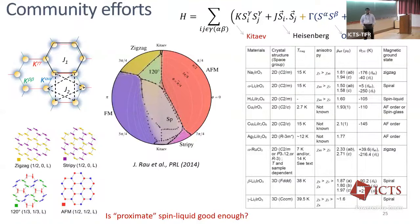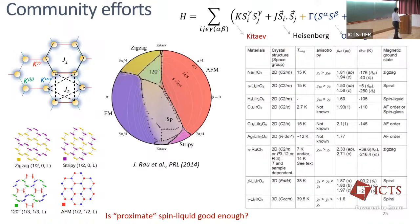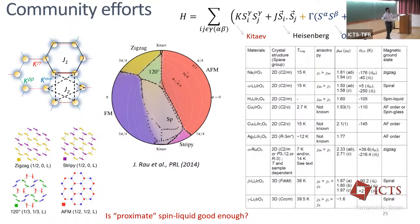So that raises the question: is a proximate spin liquid really good enough? The reason these materials order is because you have all these symmetry-allowed terms in the Hamiltonian — the Heisenberg term, off-diagonal terms, and so on — which you can't avoid in a real system. You are always away from the exactly solved point. The theoretical challenge is that quantum Monte Carlo doesn't work there either, so there is always a mismatch between what we get in a material and what the theory wants.